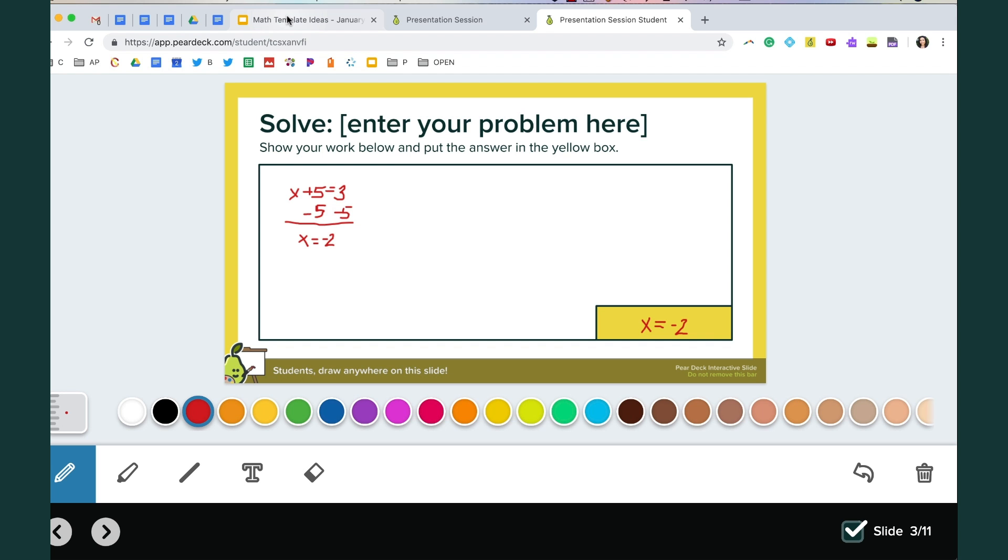For the incorrect answers, what were any common misconceptions that students had. Discuss it, talk about it, and learn from those mistakes. For any correct answers talk about how the approaches differed. If one approach was more efficient, why students might take different approaches. And again for those incorrect answers really identify the source of the error and analyze potential sources of those common misconceptions so that everybody in the class can grow.